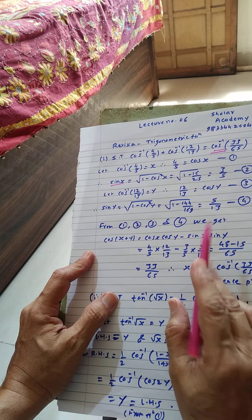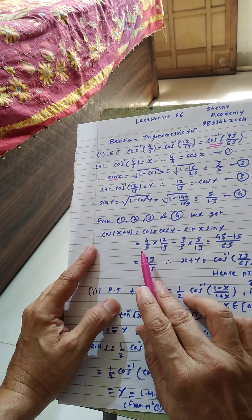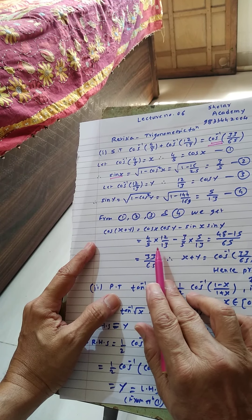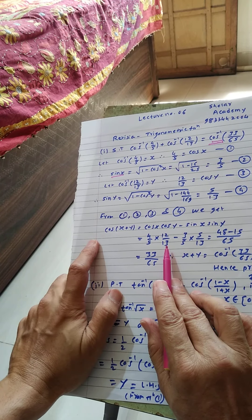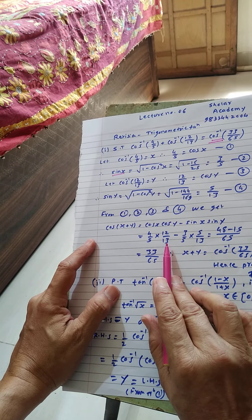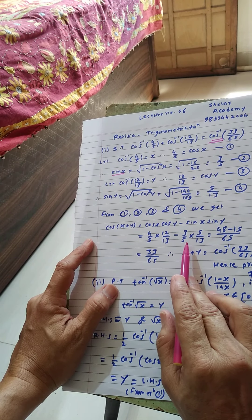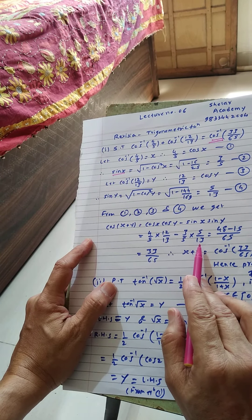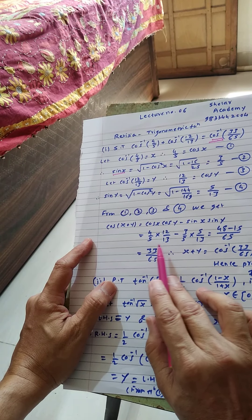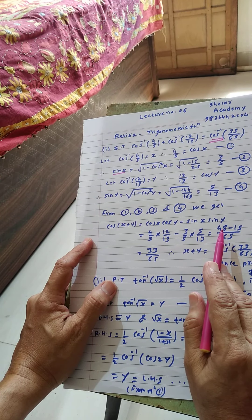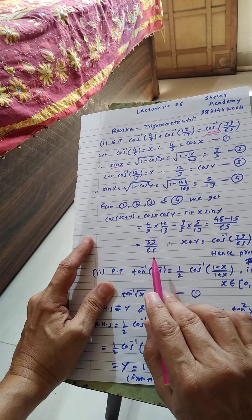Now cos x plus y formula is cos x cos y minus sin x sin y. Now put the values from equation number 1, 2, 3, 4: that is cos x, 4 by 5 into cos y, 12 by 13 minus sin x, 3 by 5 into sin y, 5 by 13. Now 13 into 5 is 65 LCM, and 48 minus 15, that is 33 by 65.